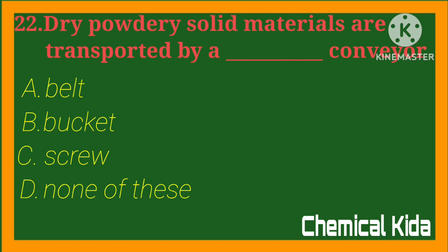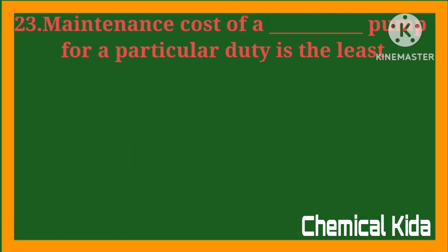Dry powdered solid materials are transported by which type of conveyor? a) belt, b) bucket, c) screw, d) none of these. Answer: c) screw conveyor. Maintenance cost of a pump is least for: a) centrifugal pump, b) reciprocating pump, c) volute pump, d) gear pump. Answer: a) centrifugal pump.